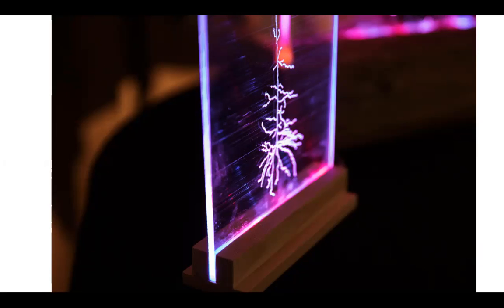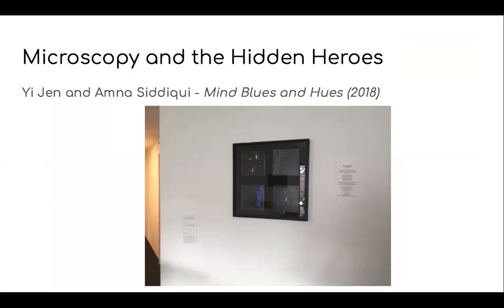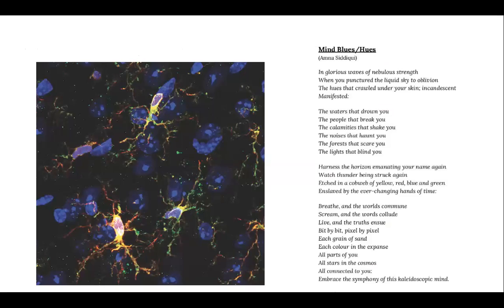Staying on the theme of micro anatomy, Yijen and Anna Siddiqui are researchers who created a joint piece — microscopy images of microglia in yellow, and then a poem as well. This was in the 2018 exhibition that EDGE did. EDGE then curated a symposium a couple of weeks ago, where this was displayed again. The first thing most people say is it looks like a galaxy — this ramified microglia. Then you have this beautiful poem by Anna. Everybody knows about a neuron, but microglia also have an incredibly important role within the brain as the brain's immune system.